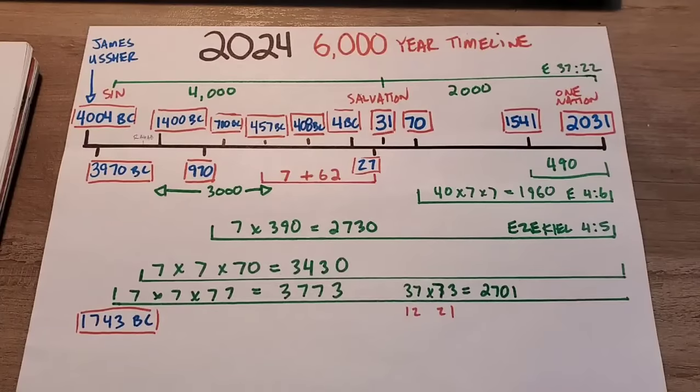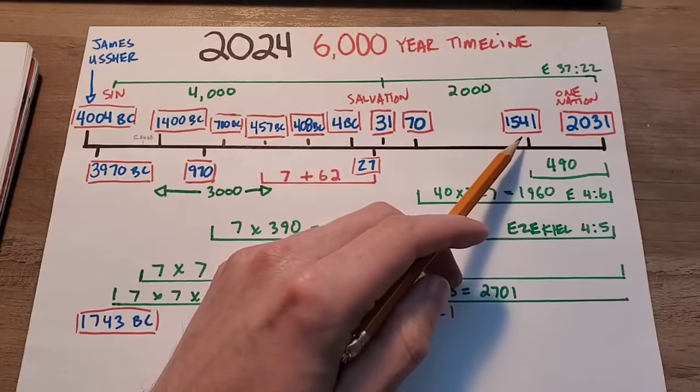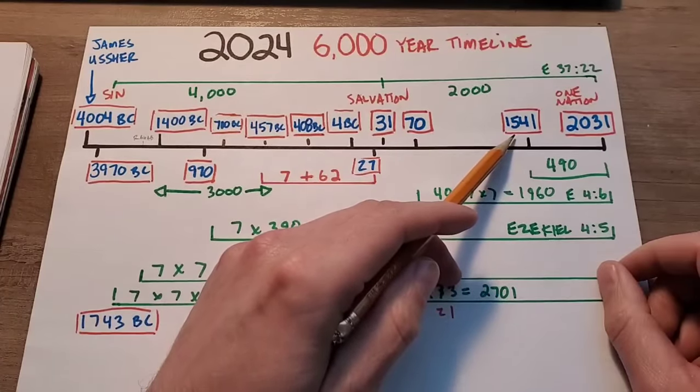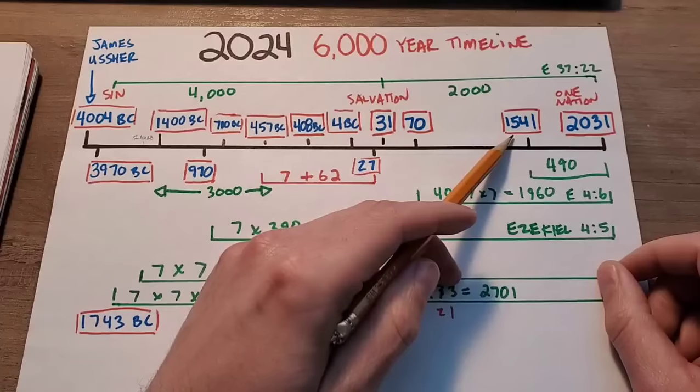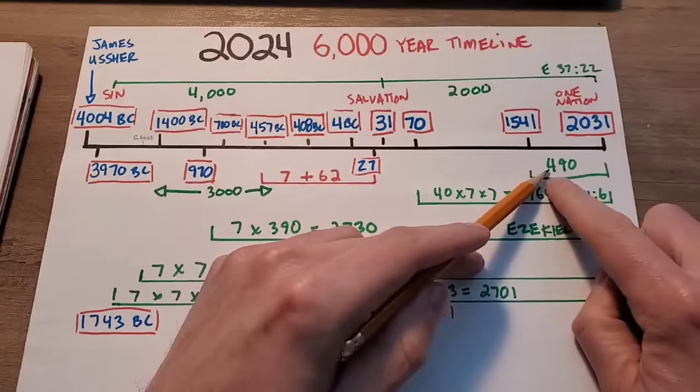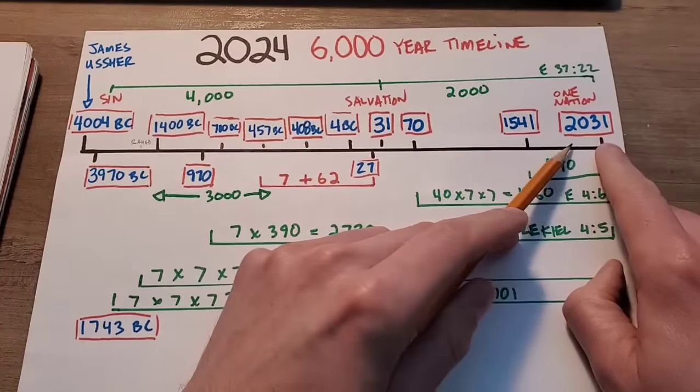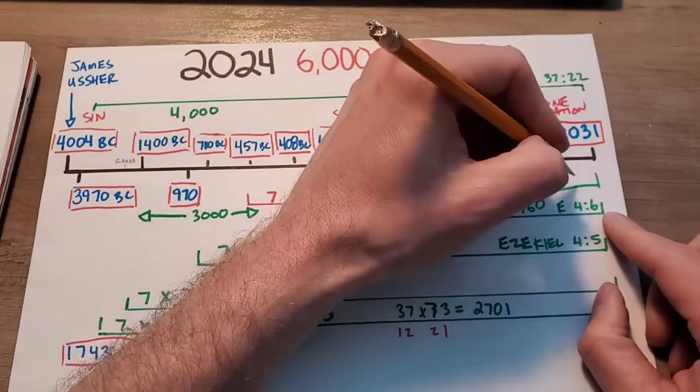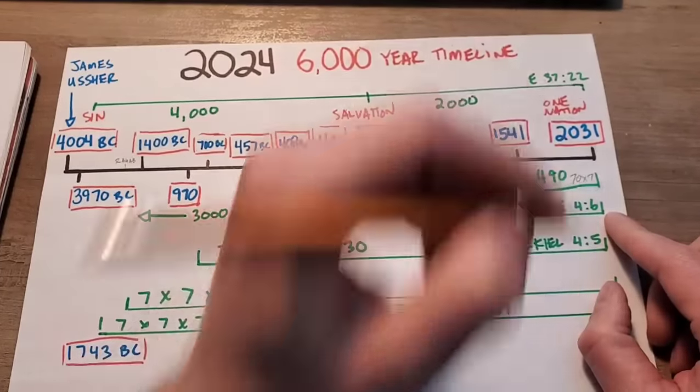And I don't know if this is actually going to be the timeline, folks. Like I said, I'm always speculating, but this fits real nice. Okay, so in 1541, there was a guy that sealed up the Golden Gate. Now, there's different dates on that, but that's the last date that I was able to find online. And if you add 490 years from that date, that is 2031. 490 is 70 times 7.